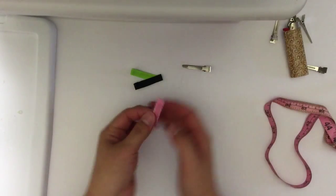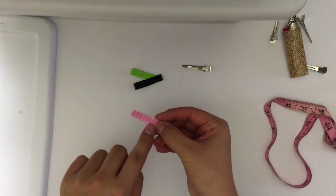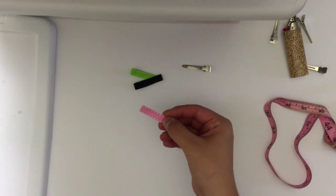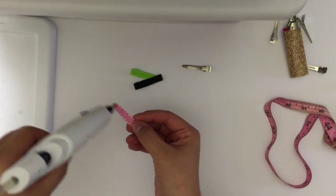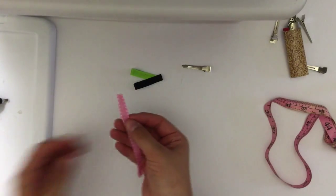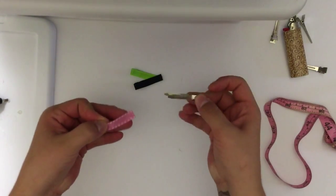First step: you want to place a thin strip of glue about three quarters of an inch in on one end of your ribbon. You don't want to put too much because you don't want excess glue to be spilling out of the sides.